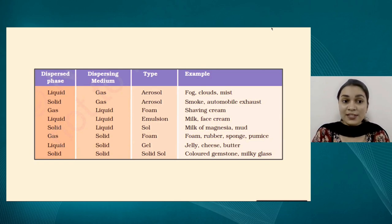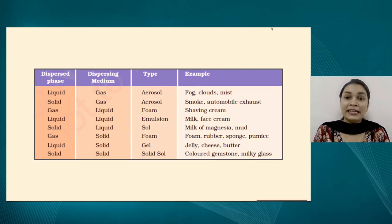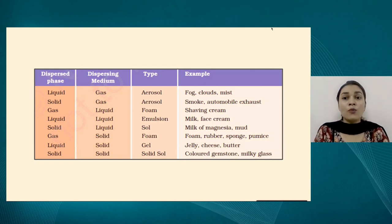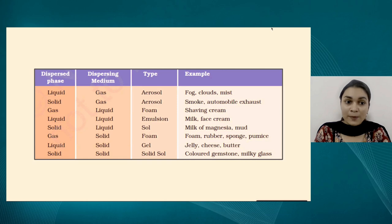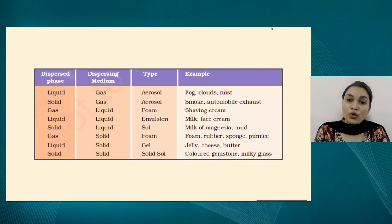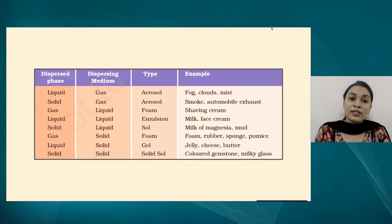When the dispersed phase is a liquid and the dispersion medium is a gas, we have liquid particles suspended in a gas — this type of colloid is called an aerosol. Examples are fog, clouds, and mist, which are all water vapour suspended in air. When the dispersed phase is a solid and the dispersion medium is a gas, it is also called an aerosol. Examples are smoke, automobile exhaust, and pollution from factories — all called aerosols.